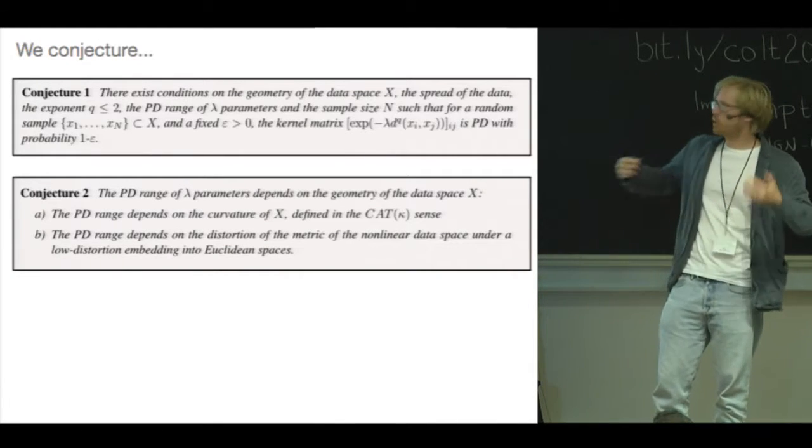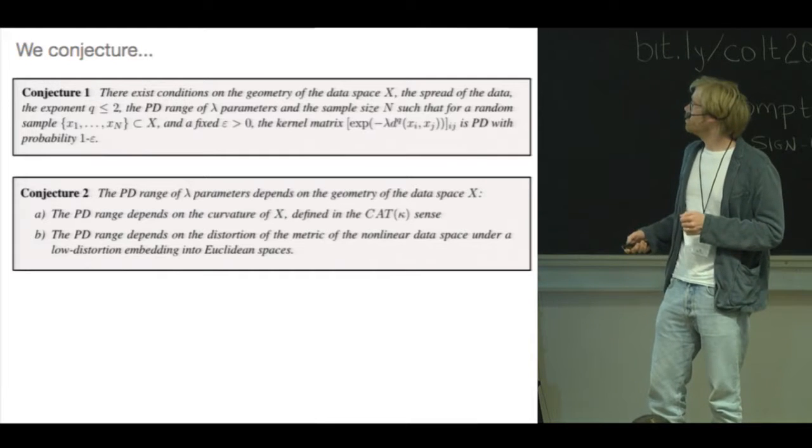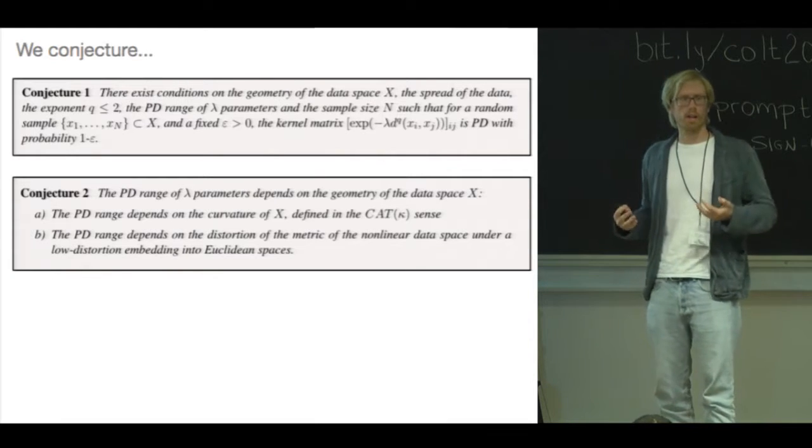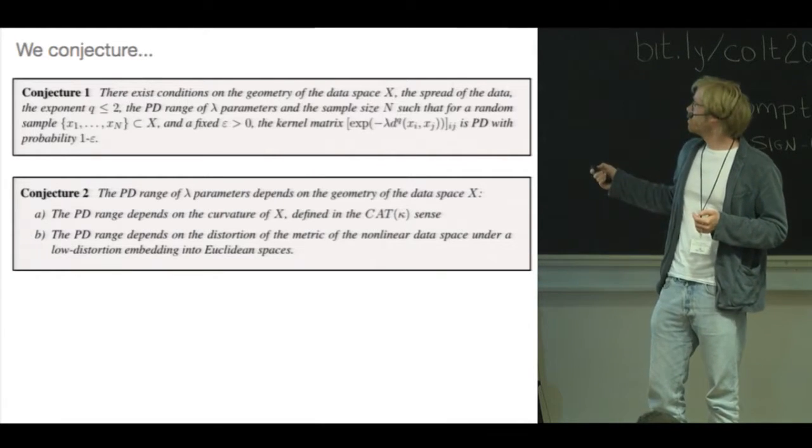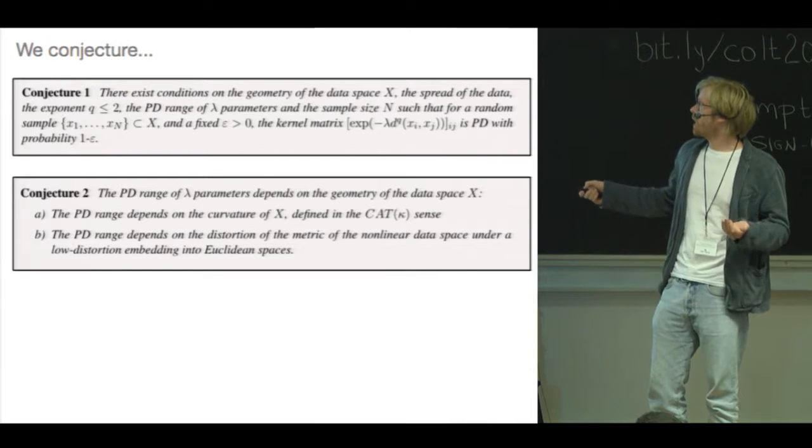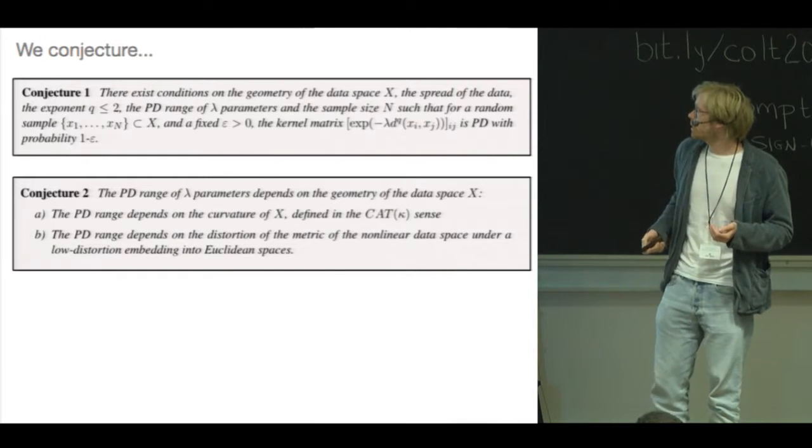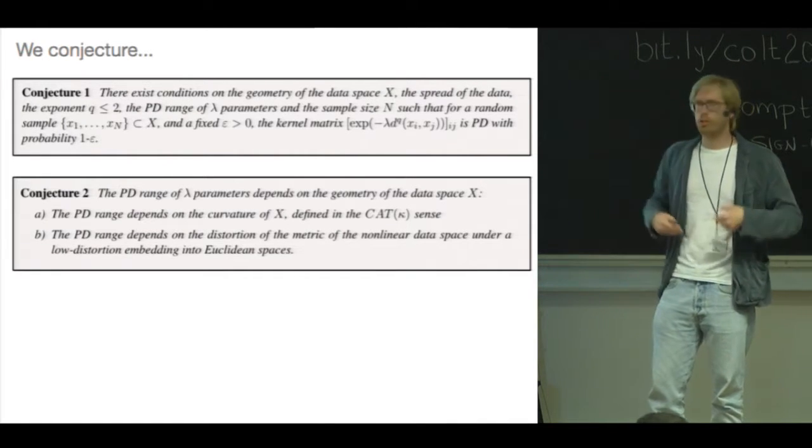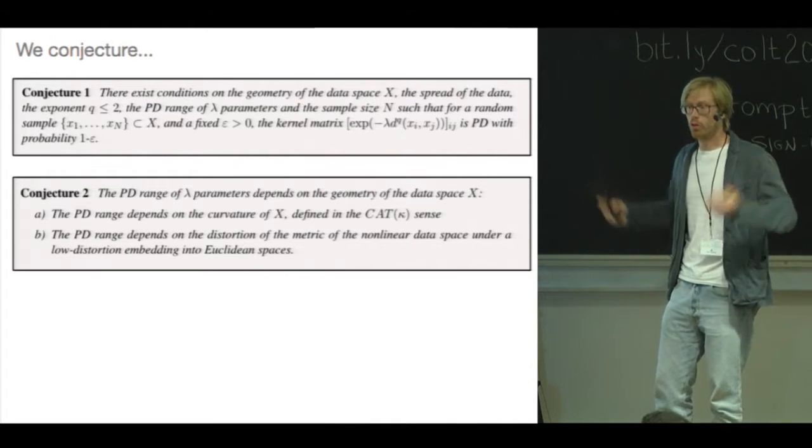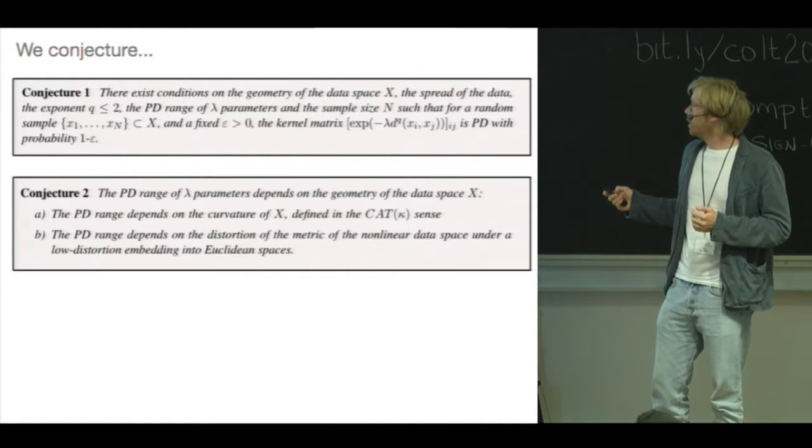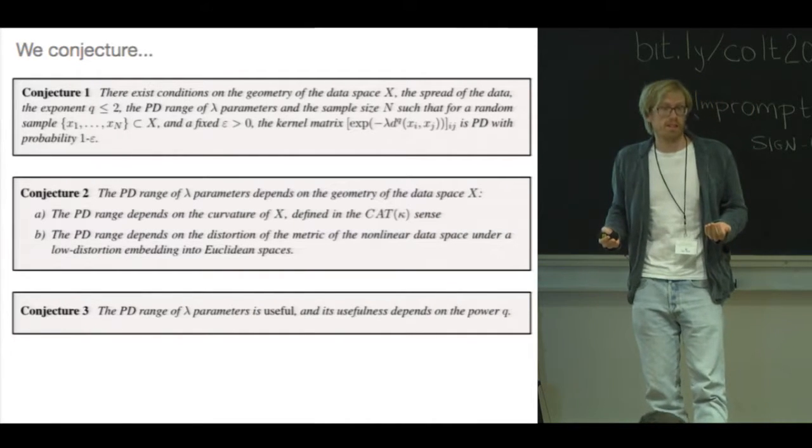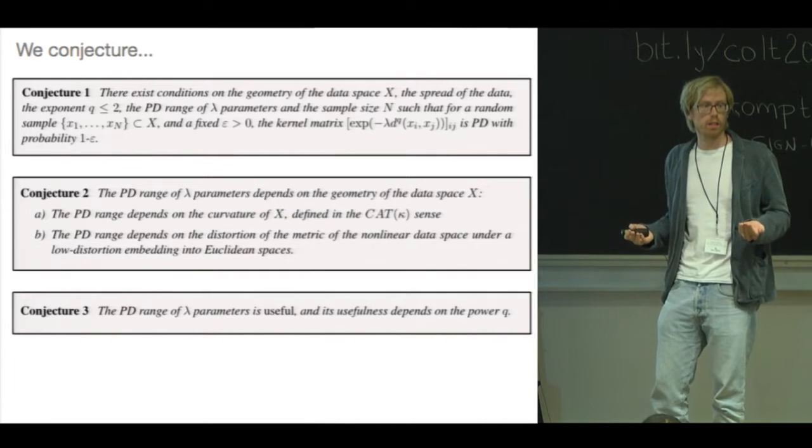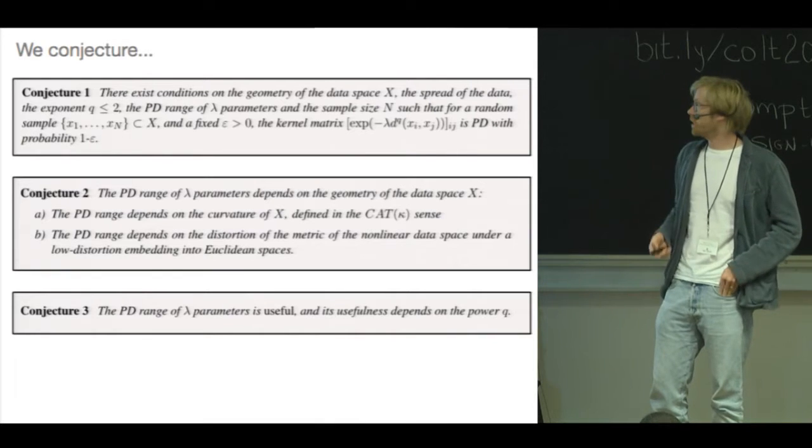So how would you put up conditions on your data space? Well, it seems intuitive that this has to do with the underlying non-linearity of the data space. So we expect that you're going to have to either study the curvature of the data space, probably in sort of a global notion, or you should look at the distortion induced by low distortion embedding. Those are our current best guesses at the moment. Finally, we observe that you can get useful classifiers in this way, but we don't really have a good understanding of why that's the case, and it would be nice to somehow be able to understand that better.